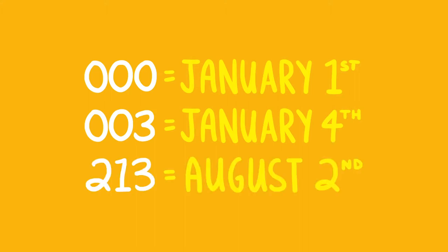So a number of 000 would mean January 1st, 003 would mean January 4th, and so on. All you really need to know is that the higher the number, the fresher the egg.